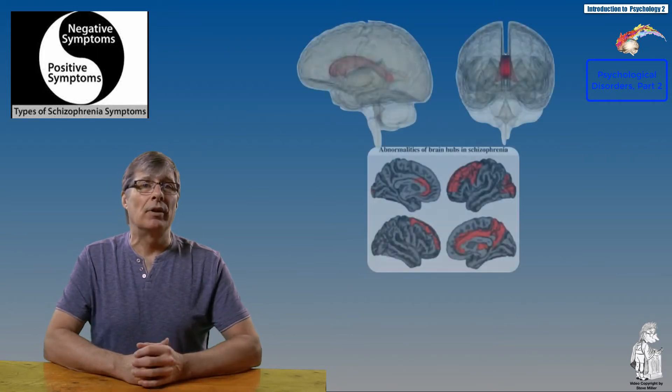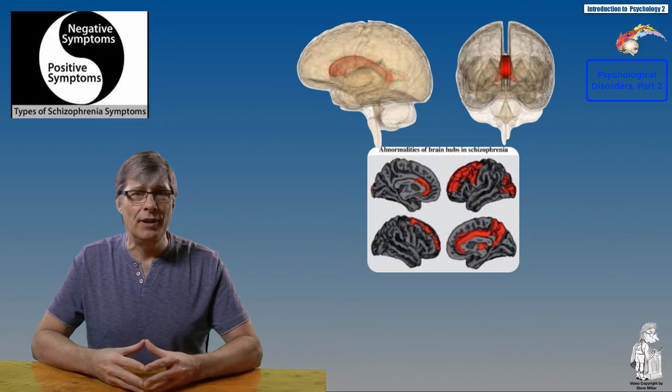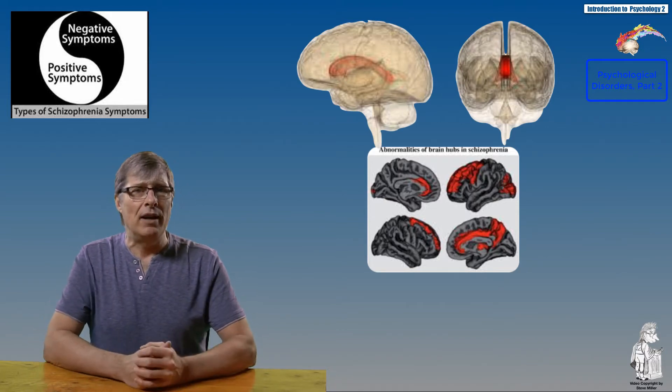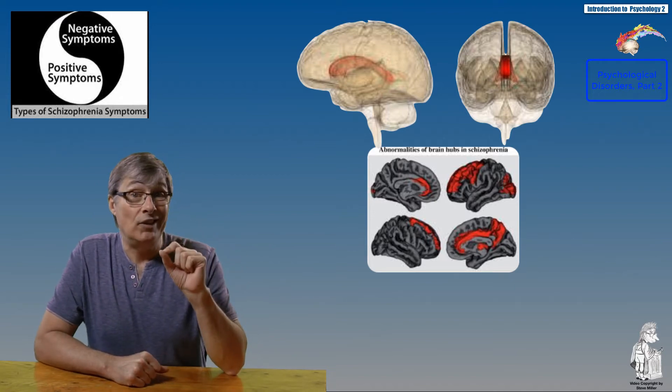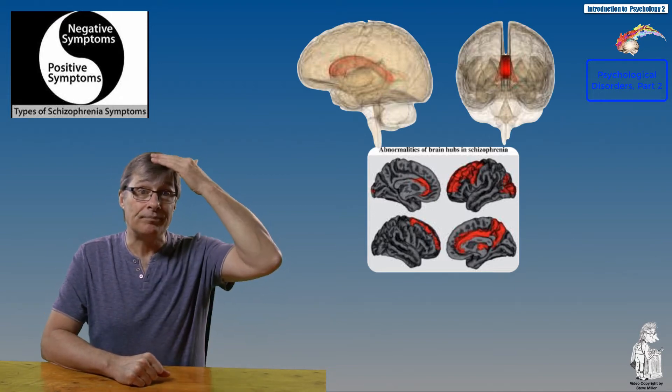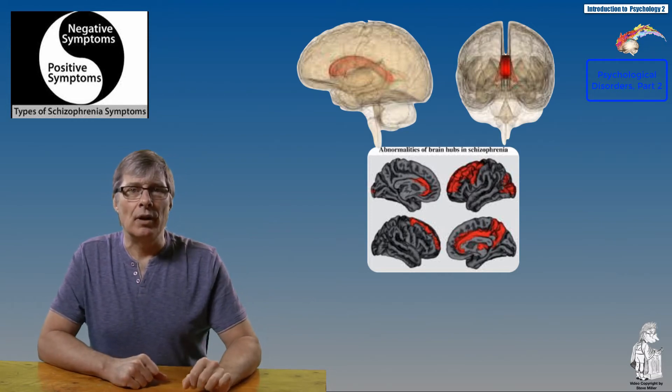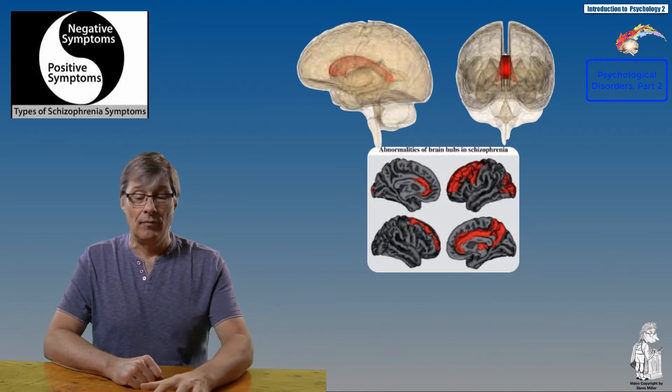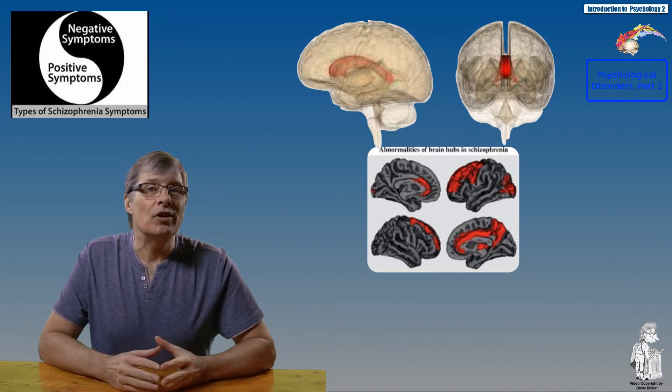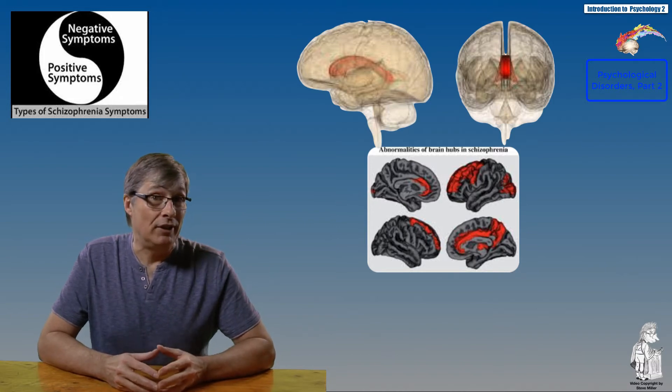Some sufferers have brain abnormalities associated with schizophrenia: low levels of neural activity in the frontal lobes, defects in neural circuitry of the cerebral cortex and limbic systems, reduced volume in the hippocampus, amygdala, thalamus, and frontal lobe gray matter.